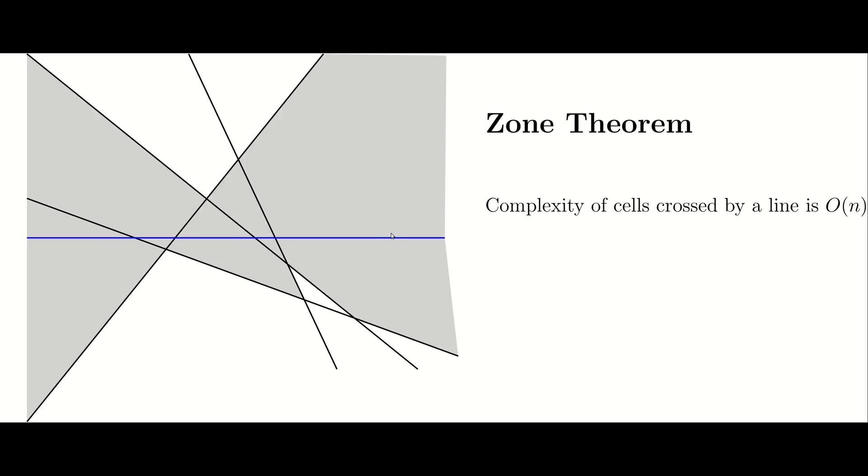The zone theorem says that if you look at all these cells and add up the number of edges and vertices surrounding these cells, the bound will be linear.